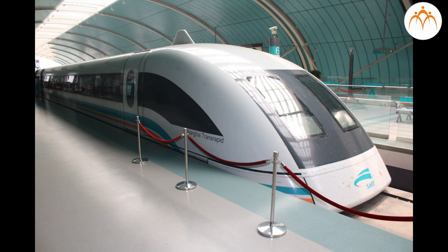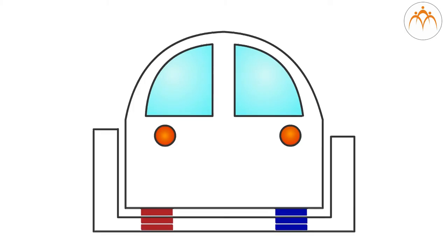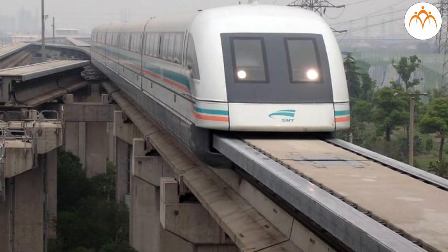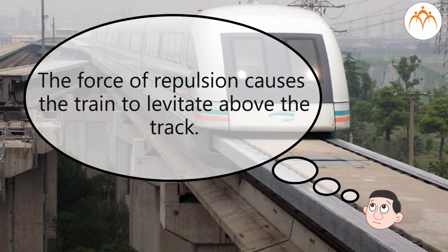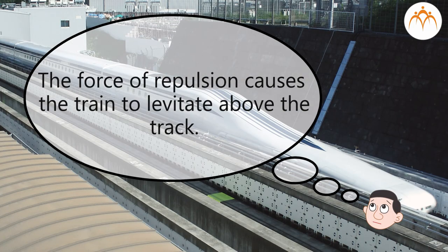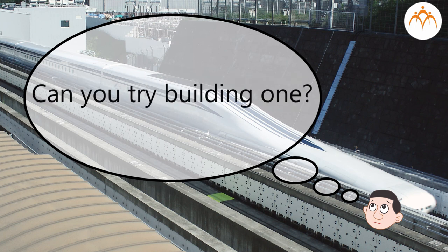A maglev train contains permanent magnets that are repelled by strong electromagnets in the track. The force of repulsion causes the train to levitate above the track. Can you try building one?